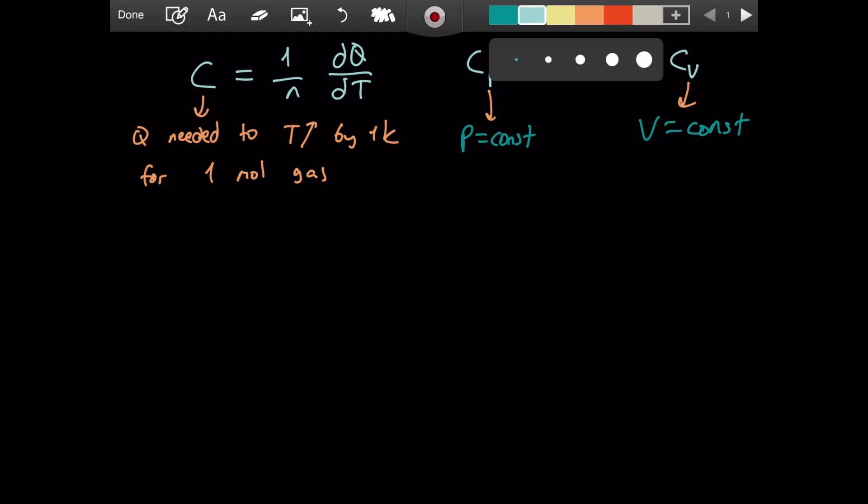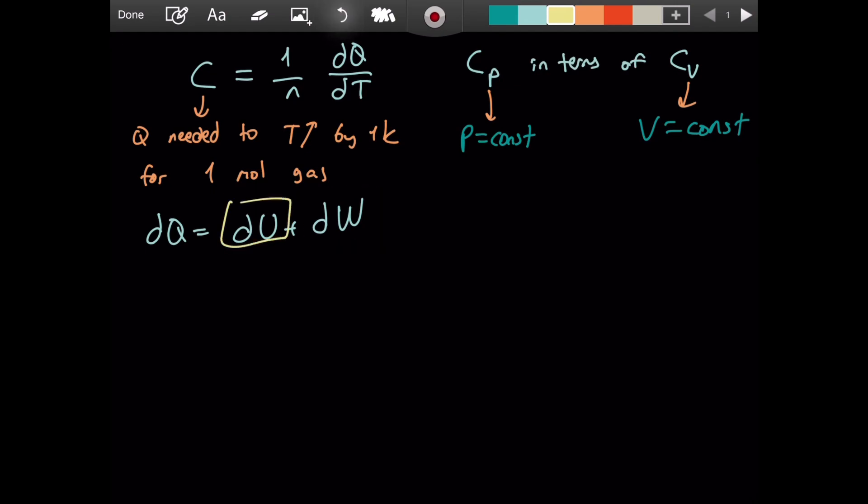All right, so what is Cp in terms of Cv? Well, before we can answer that ultimate question, as it is often the case, we need to discuss other things that lead to it. So we have a formula for dq, and that is, I think, called the second law of thermodynamics. It is basically saying dq is, for an ideal gas, for any gas, it will be du plus dw. du is the internal energy, and dw is differential work. And dq is the amount of heat that we give, or the gas gives. It depends on the sign.